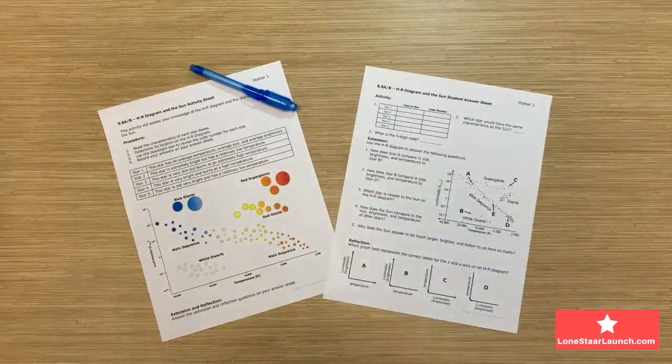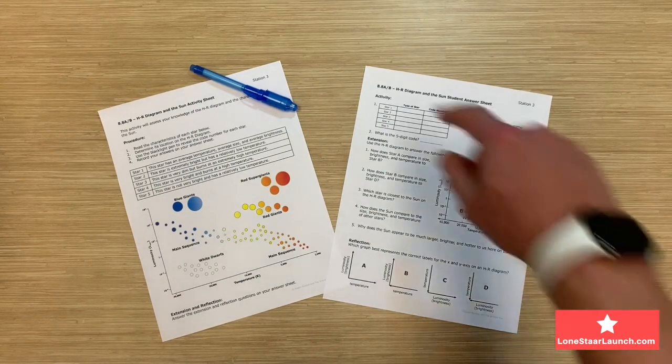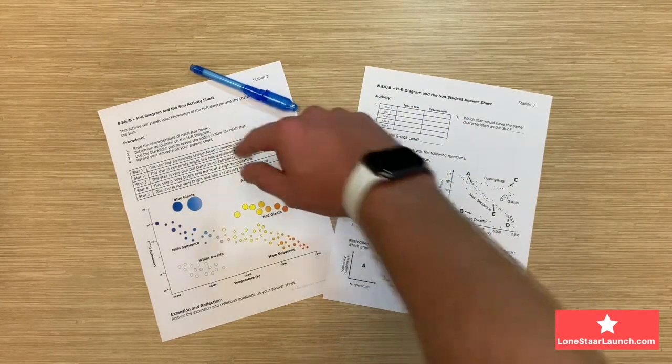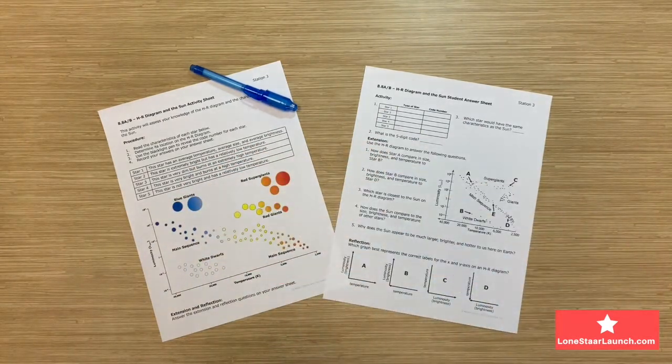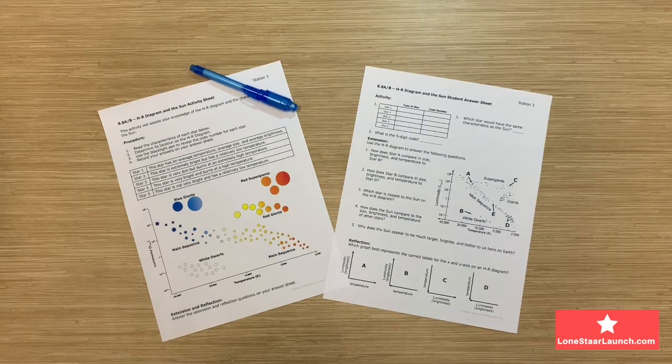Let's look back at the activity sheet. Prior to setting out the station, the teacher will use an invisible ink pen to place numbers on the HR diagram. We've provided you with a key in the station document.